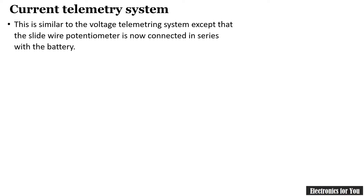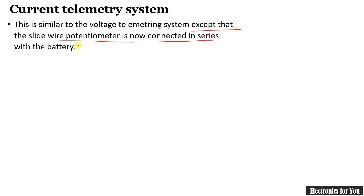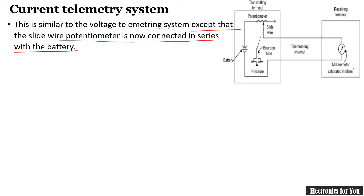A current telemetry system will provide the output in the form of current. It is similar to the voltage telemetry system except that the slide wire potentiometer is now connected in series, because in the previous circuit it was connected in parallel as we were measuring voltage. In the current telemetry system, we are measuring current and therefore the potentiometer should be connected in series.